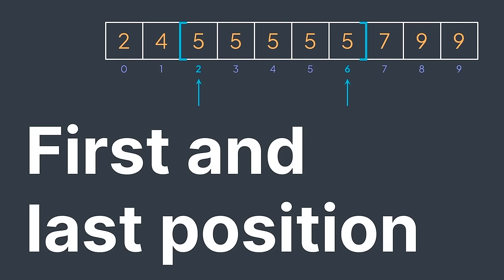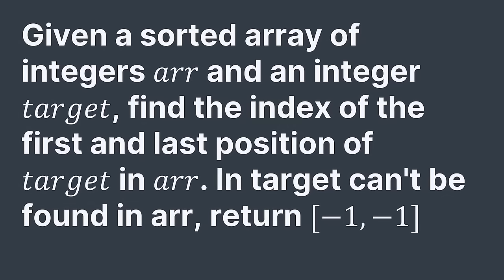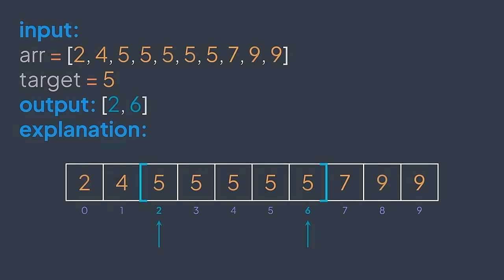Welcome back. In this lecture, we will solve the first and last position problem. We are given a sorted array of integers r and an integer target, and we're asked to find the index of the first and last position of target in r. If target can't be found, return [-1, -1]. For example, if r is [2, 4, 5, 5, 5, 5, 5, 7, 9, 9] and target is 5, the output would be [2, 6], because the first position of target is 2 and its last position is 6.